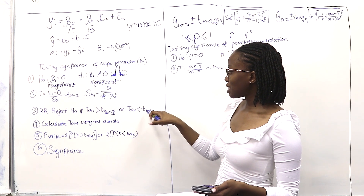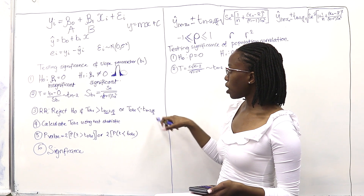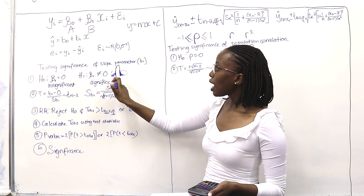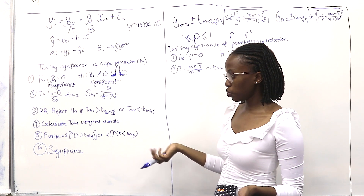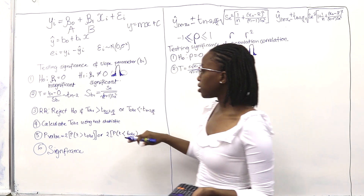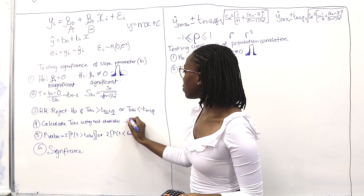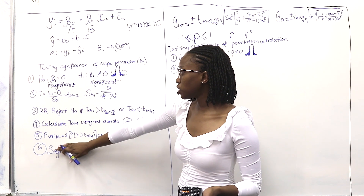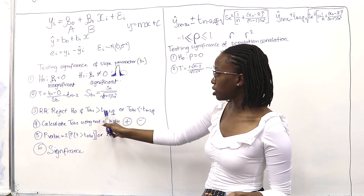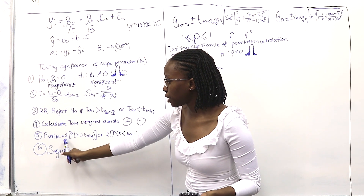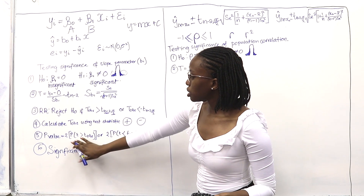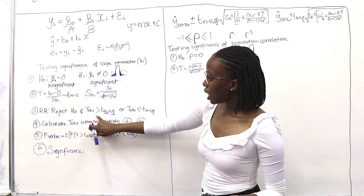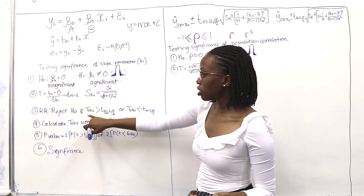Or if T observed is less than negative t(n−2, α/2). So if what we calculate in step 4 falls in either tail, we reject H0. You can get either a positive or negative T observed. If you get a positive value, the p-value calculation uses 2 times P(T greater than T observed), since we said alpha over 2.